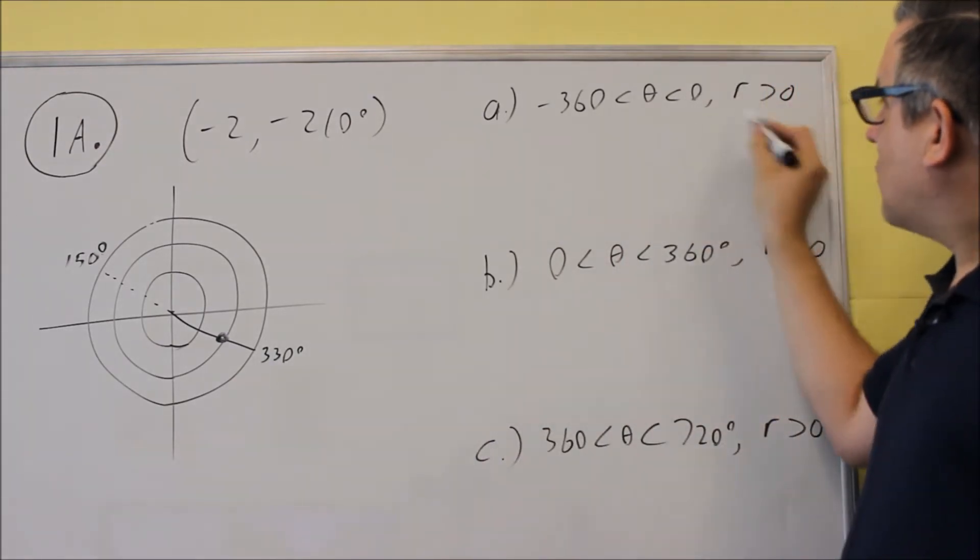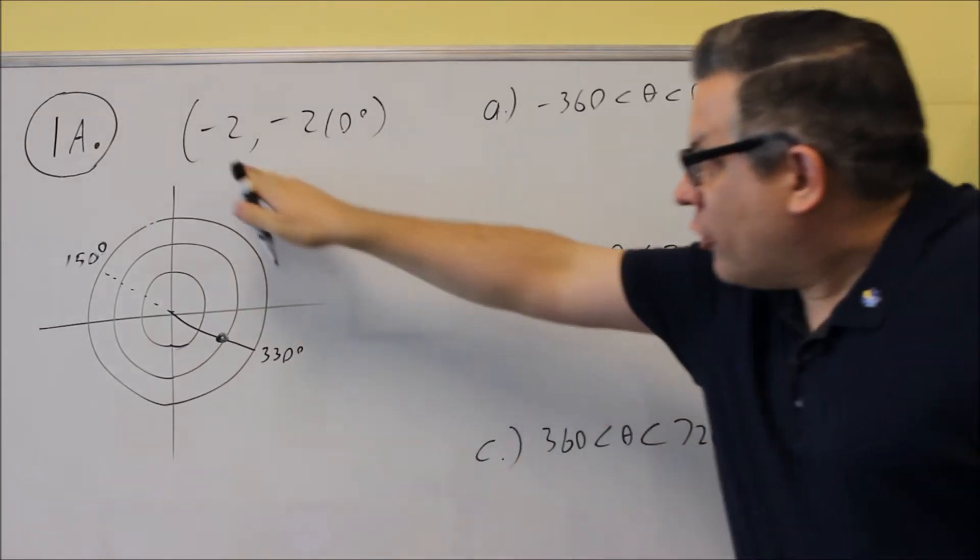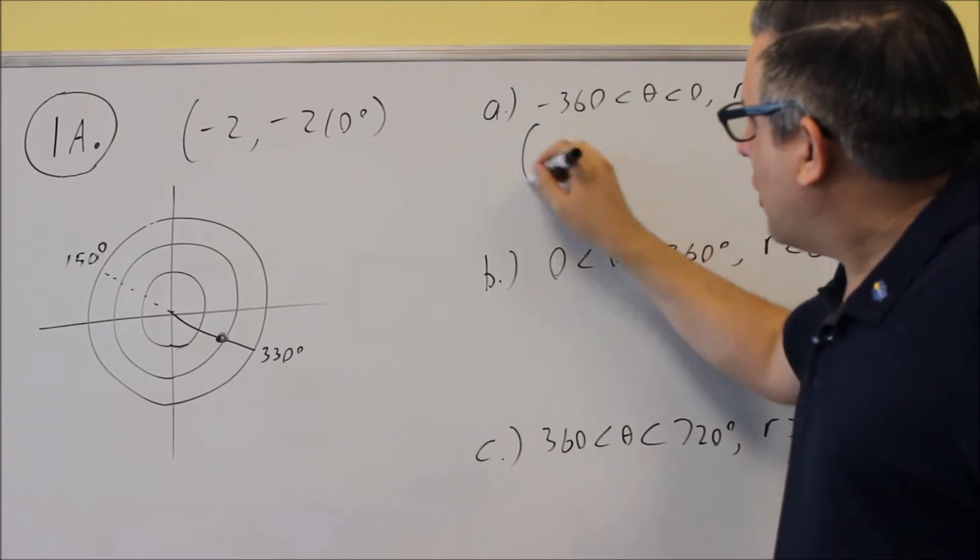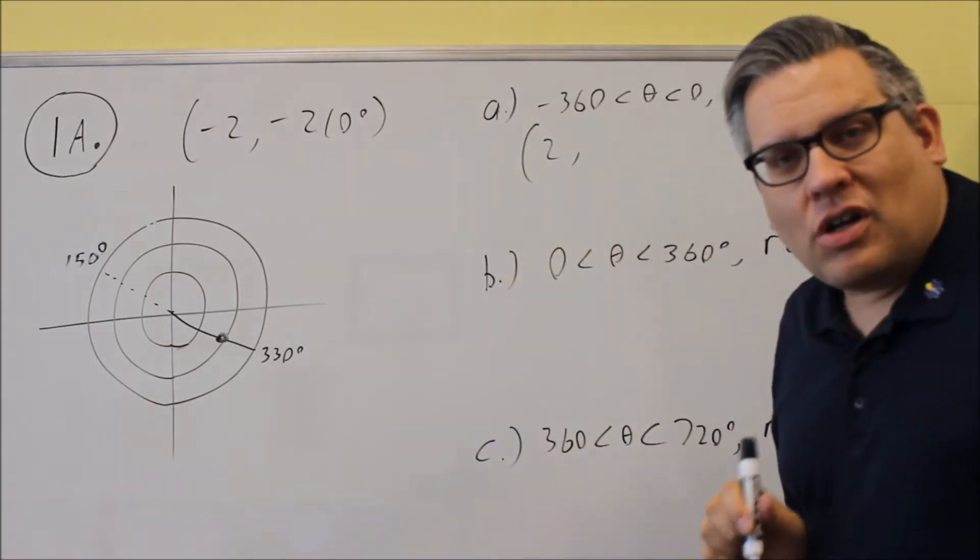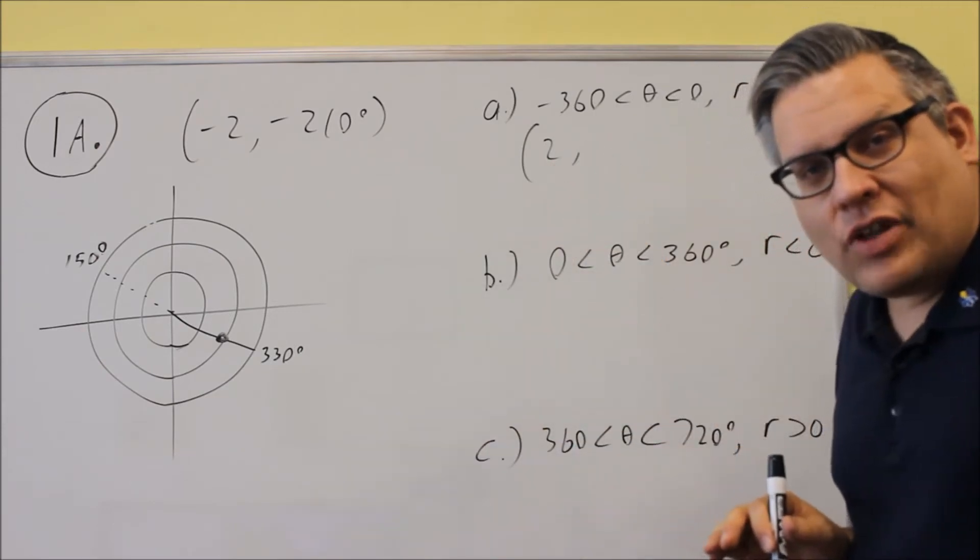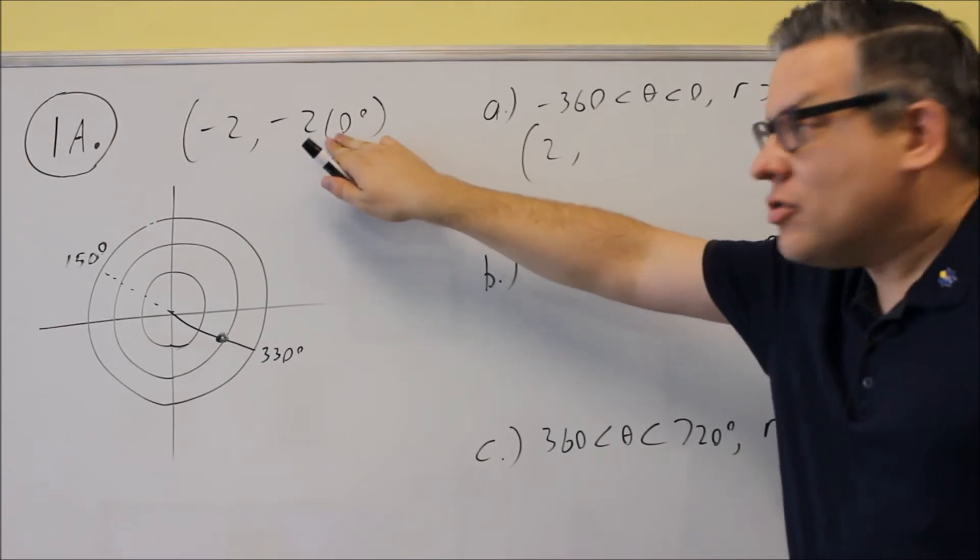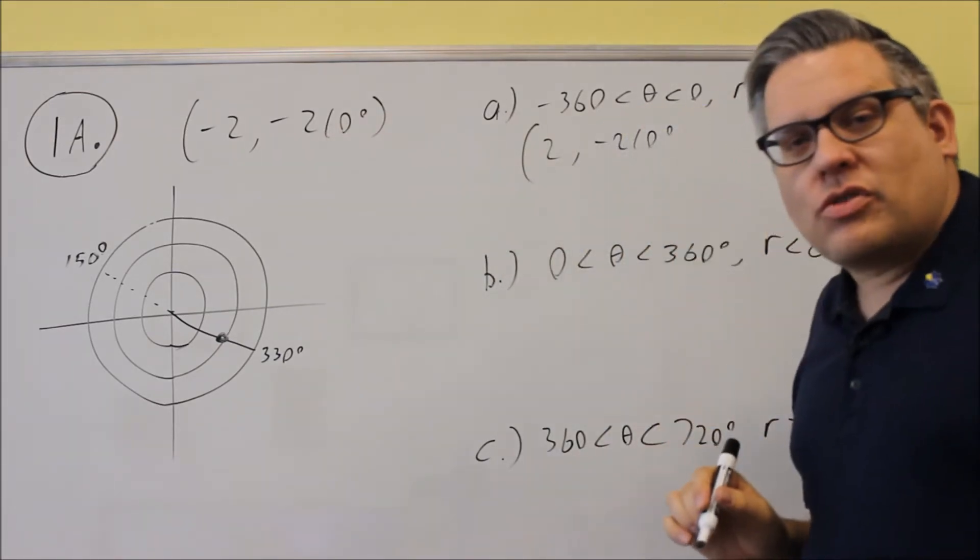Okay, so in this case, they want R to be greater than zero. Well, the original R in the problem is negative. So I want to change the R into a positive 2 from a negative 2. Because I'm changing the sign of the R, making it positive, that means I need to choose to either add or subtract 180 to the negative 210 degrees here. So I'll start with negative 210.